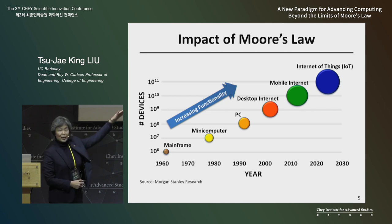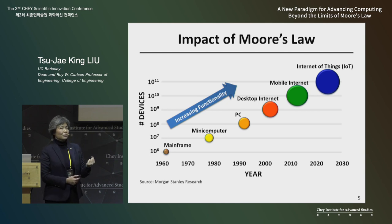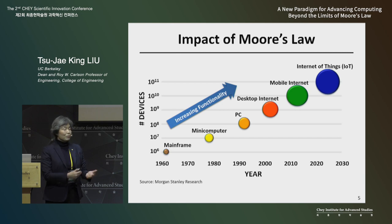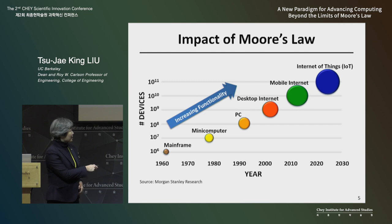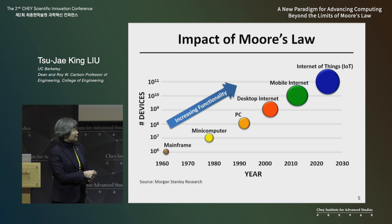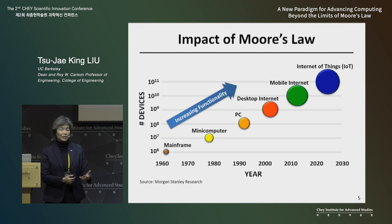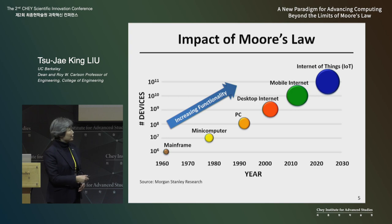If we project into the future, today we have over 10 billion computing devices in the world — more than the number of people in the world. But this is an exponential plot. The number of computing devices within the next 10 years will be much larger than the number of people in the world. This is what we refer to as the internet of things.